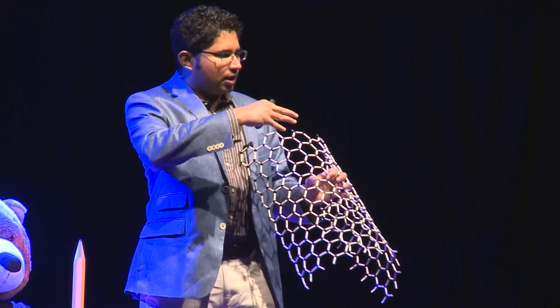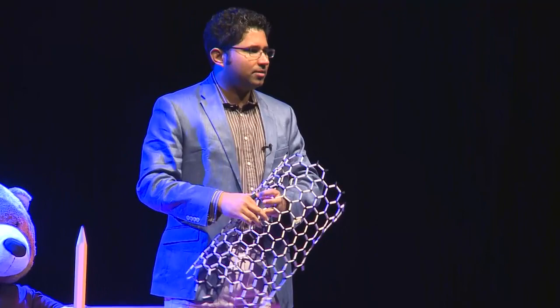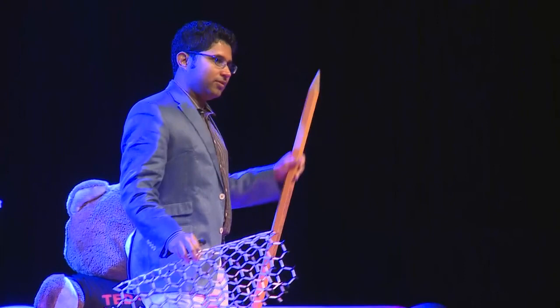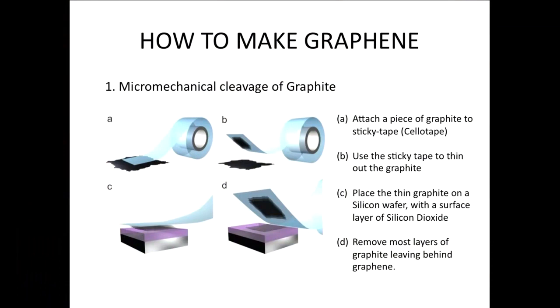If you take graphene, think of it as a sheet, and you stack the sheets up, then you get graphite. The name must have sounded familiar — graphene comes from graphite. How do you know graphite? Graphite is the stuff found in the lead of your pencil. You also use graphite in nuclear reactors and batteries, so it's been around for a long time. And then we have graphene, which is a rather recent discovery made at the University of Manchester.